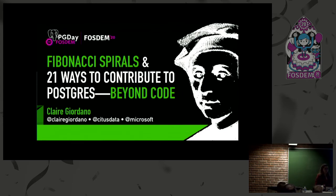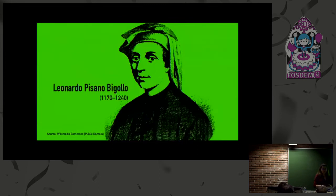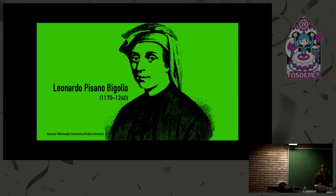My name is Claire Giordano and I'm here to talk to you today about Fibonacci spirals and 21 ways to contribute to Postgres beyond code. Before we start, I want to put a face to the name. This man had lots of names: Leonardo Pisano Bigelow, Leonardo of Pisa, Leonardo Bonacci. It turns out that Fibonacci was actually his nickname, and it means literally 'son of Bonacci.'